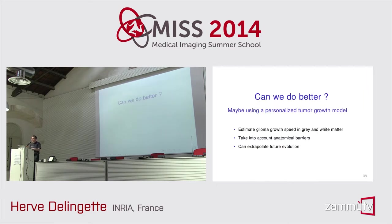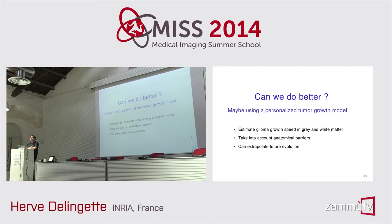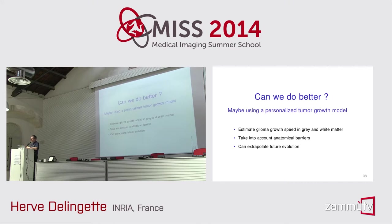Can we do better? We hope so. This is why we started developing personalized tumor growth models. One main application is to propose more physically grounded ways of measuring tumor progression, rather than relying on a single diameter or volume. Our evaluation of tumor growth also takes into account anatomical barriers — for instance, the tumor cannot grow into the CSF (cerebral spinal fluid) — which is very important for assessing tumor growth speed. We would also like to use the model to predict the future extent of the tumor.